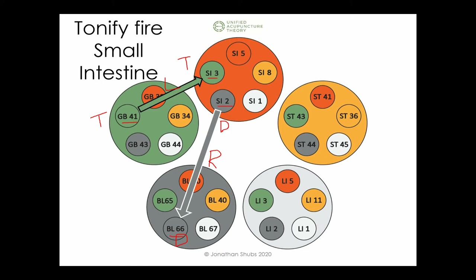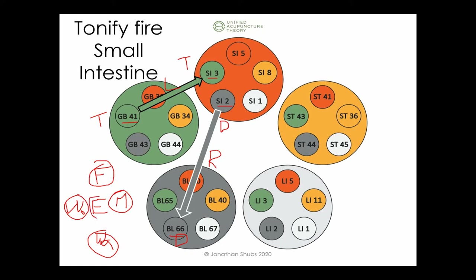Earth being the center is where all the elements come out of — earth is the great unifier of all four elements. Going back to the origins of yin and yang, the first separation of yin and yang is earth and heaven. Heaven and earth together — yin and yang together — create the myriad things.